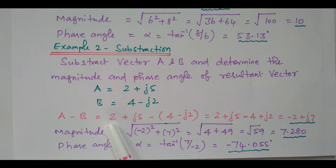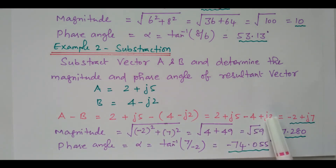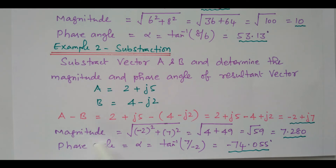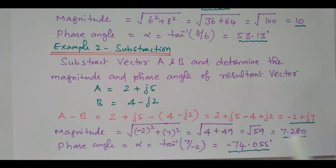Now we can add both the real terms: 2 minus 4 is minus 2. J5 plus J2 is J7. So it is easily subtracted when it is in the rectangular form. We just need to add both the real terms and both the imaginary terms. One more question is we need to find the magnitude: square root of real term squared plus imaginary term squared. Real term is minus 2, imaginary term is 7. So the value is 7.28.